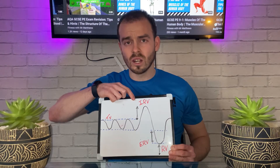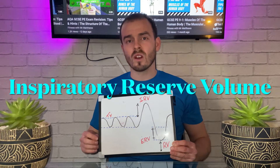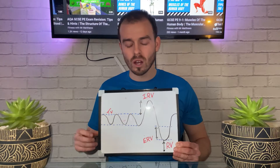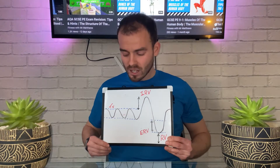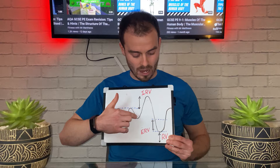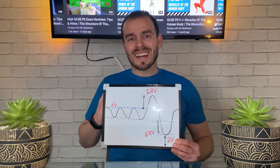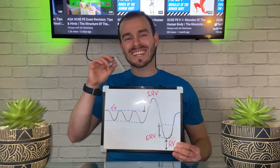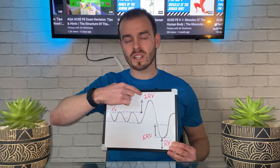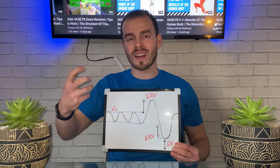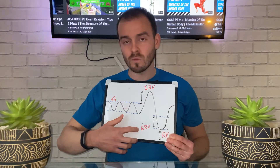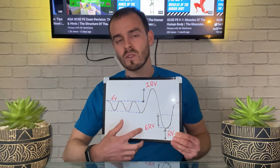Your second lung volume, inspiratory reserve volume, refers to the extra amount of air you take in on top of tidal volume. So imagine we're breathing in and out normally — when I forcefully inhale, that additional amount of air I take in on top of tidal volume is my inspiratory reserve volume. It's the extra air I take in above what I would usually take in at rest.